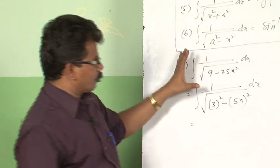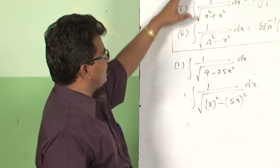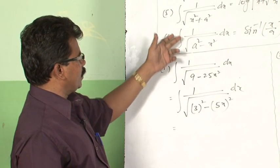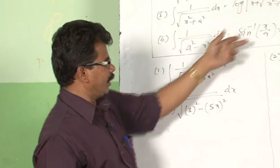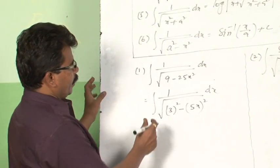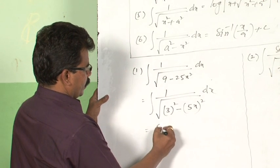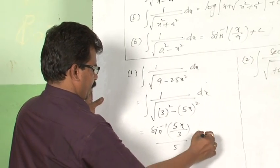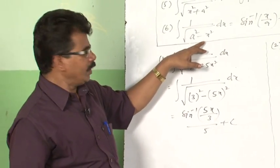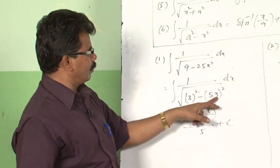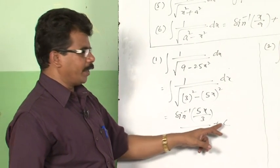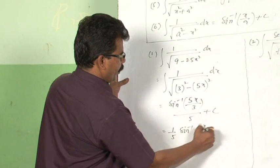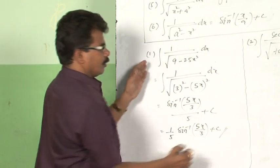If there is any scope of converting this type of function into one of these three forms, then apply that form and integrate. The integration of 1 by root of a square minus x square is sin inverse x by a. Therefore, integral 1 by root of 3 square minus 5x whole square is sin inverse 5x by 3, divided by 5 plus c. So the final answer will be 1 by 5 sin inverse 5x by 3 plus c.